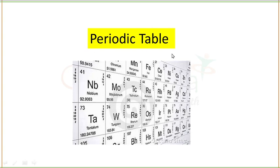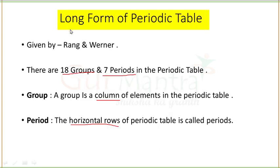Basically, the periodic table is also known as the periodic table of elements. It is a tabular display of the chemical elements which are arranged by increasing atomic number, electronic configuration, and recurring chemical properties. This structure of the table shows periodic trends. We are going to study about the long form of periodic table, which was given by Rang and Werner. This periodic table has 18 groups and 7 periods.